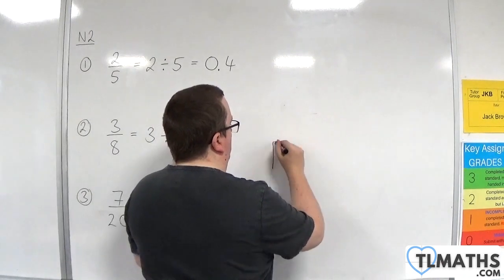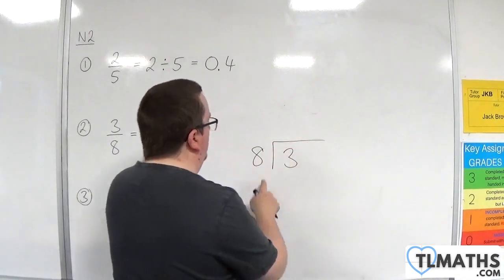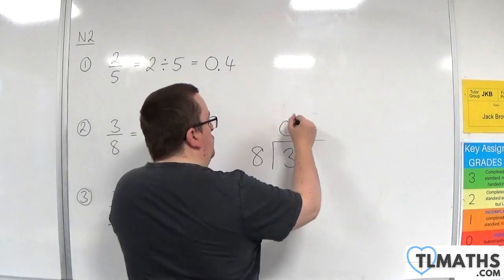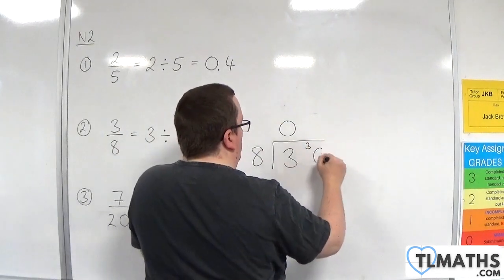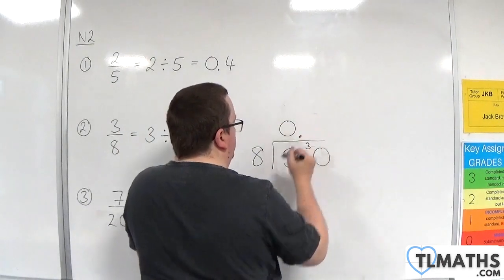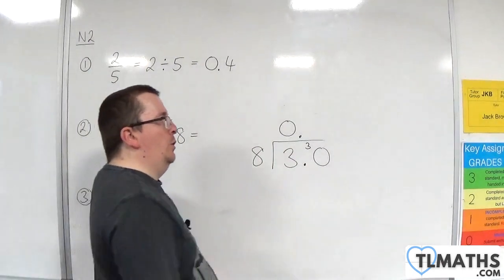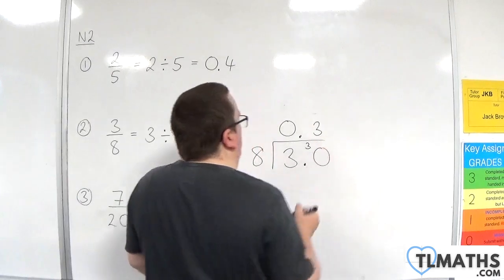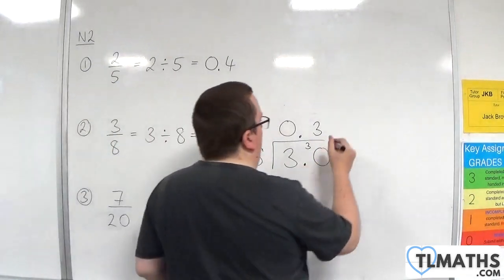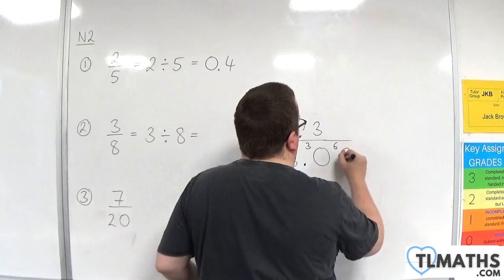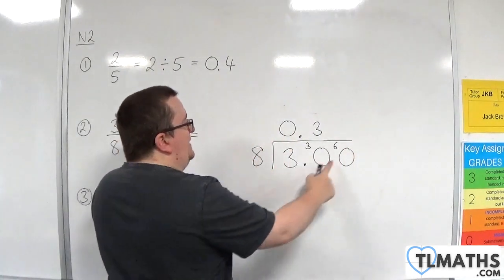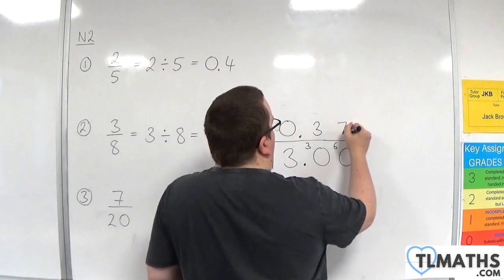Three divided by eight. Eights into three goes zero with three remainder. Bring in a zero and decimal point. Eights into 30 go three. Three eights are 24 with six left over. Bring in a zero.